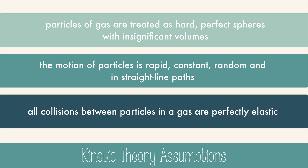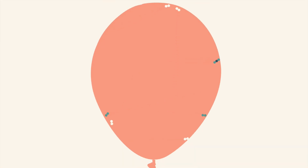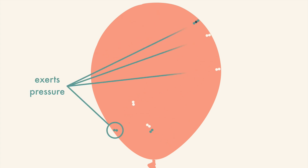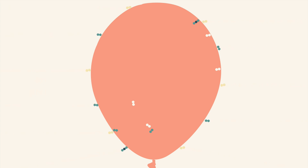Let's apply this to the balloon. The molecules bounce into each other without reacting in elastic collisions. The particles also bounce against the walls of the balloon, which exerts a pressure on the sides of the balloon. The air on the outside of the balloon also exerts pressure on the balloon.